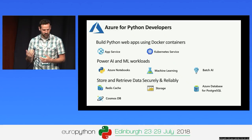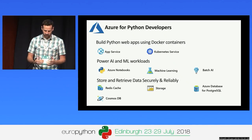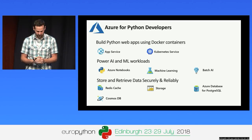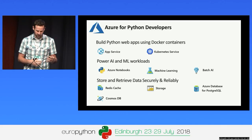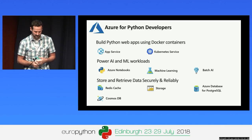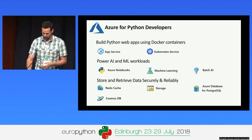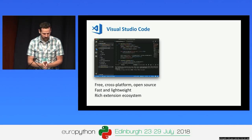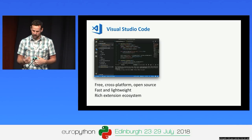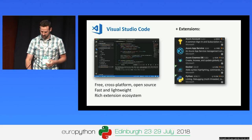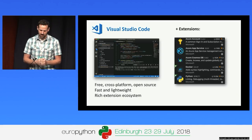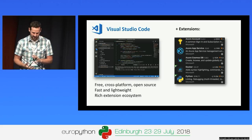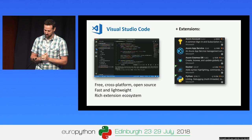We've got web app hosting in App Service and Azure Kubernetes. We'll be using Azure Notebooks, but there's also Azure Machine Learning and Batch AI for doing training of ML. We've got various data services like hosted Redis and Azure Database for Postgres, and then Cosmos DB which we'll be going through today. And then finally we'll be using Visual Studio Code, which is Microsoft's free cross-platform and open source editor. It's very lightweight and fast with a rich extension ecosystem. The extensions we'll be using today are the Python extension, which is what my team builds at Microsoft, the Docker extension, and some Azure extensions that make it really easy to package up and deploy this application.